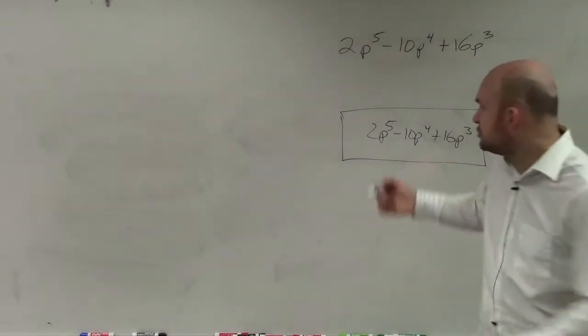So again, when you're looking at this, if you guys want to think about this, 2p to the fifth minus 10p to the fourth plus 16p cubed, we want to find out one side length, right? What is something that we can write as a side length? And so something times something else that's going to give you this.